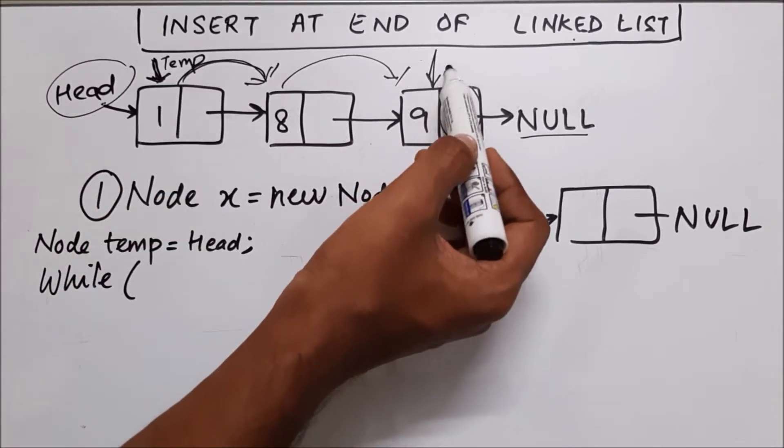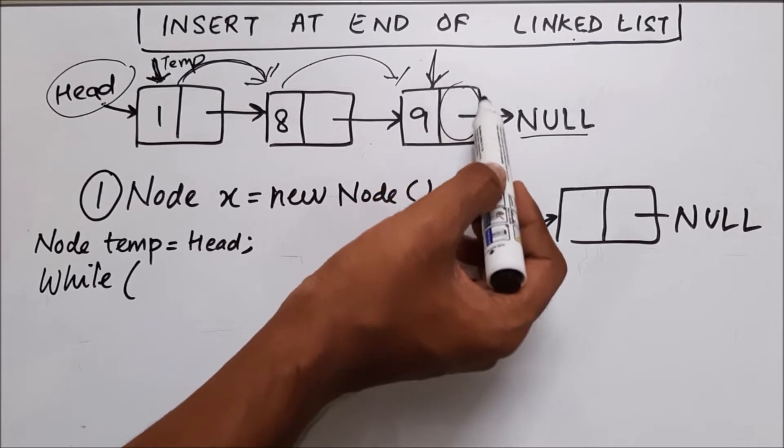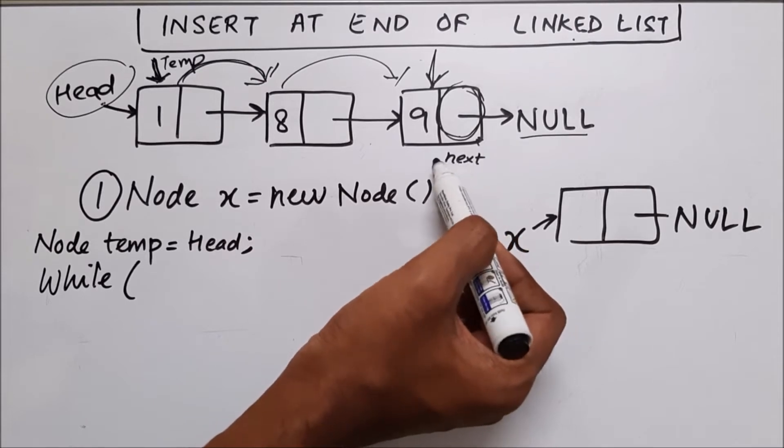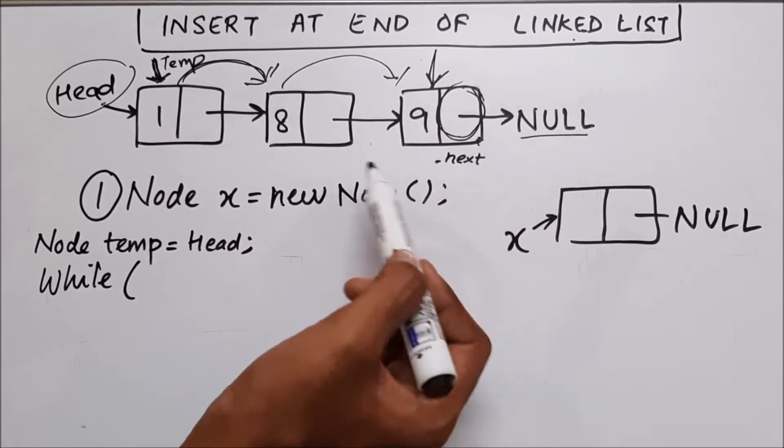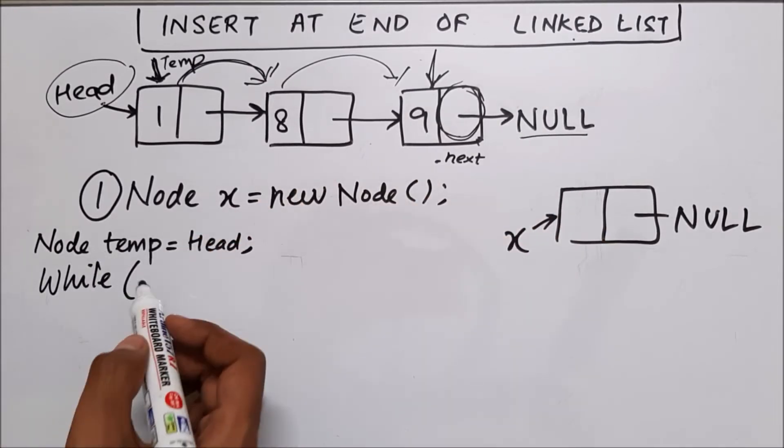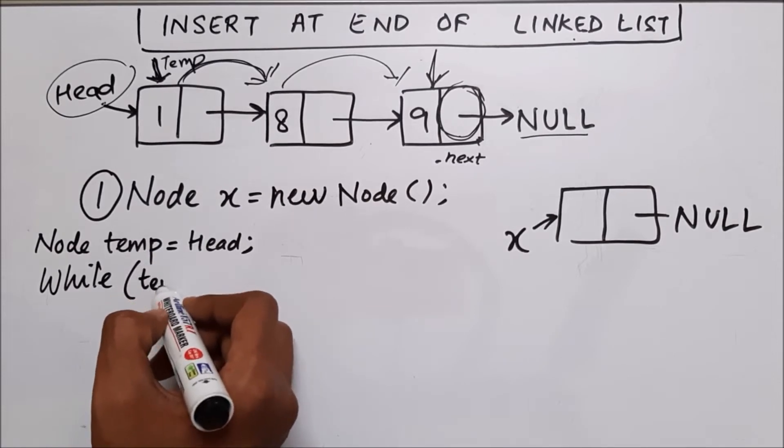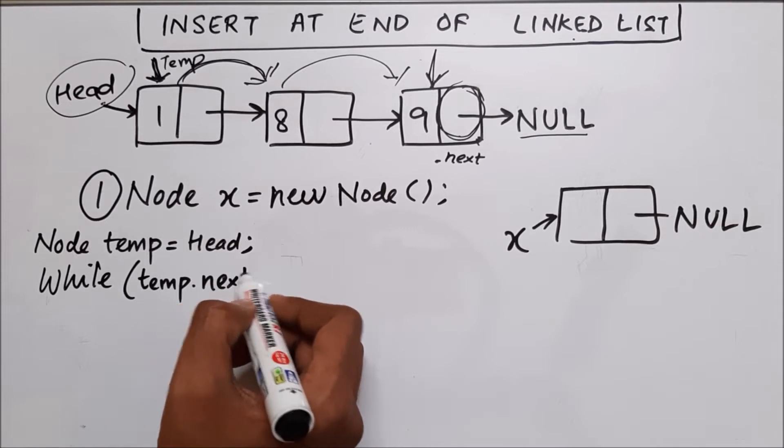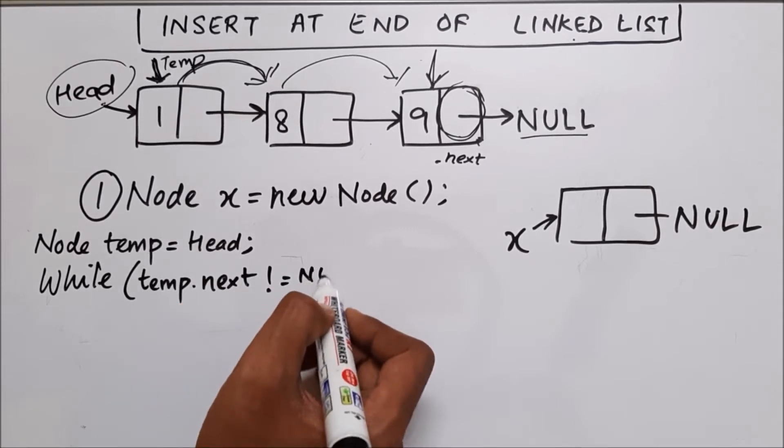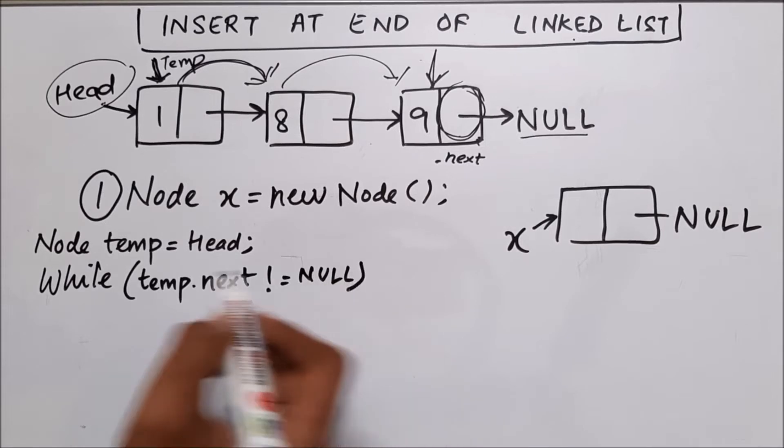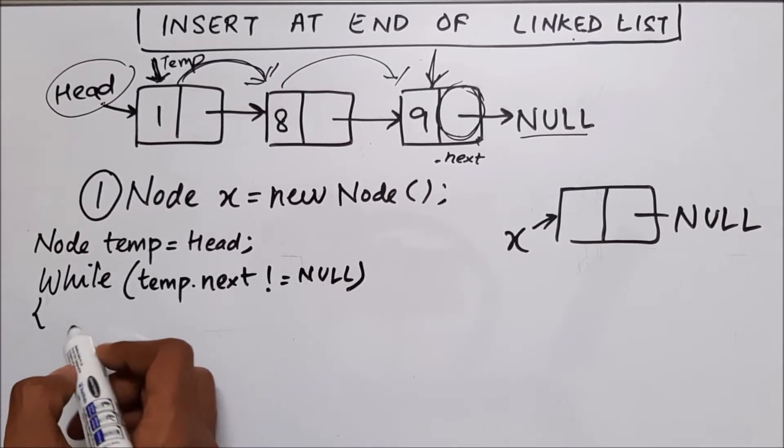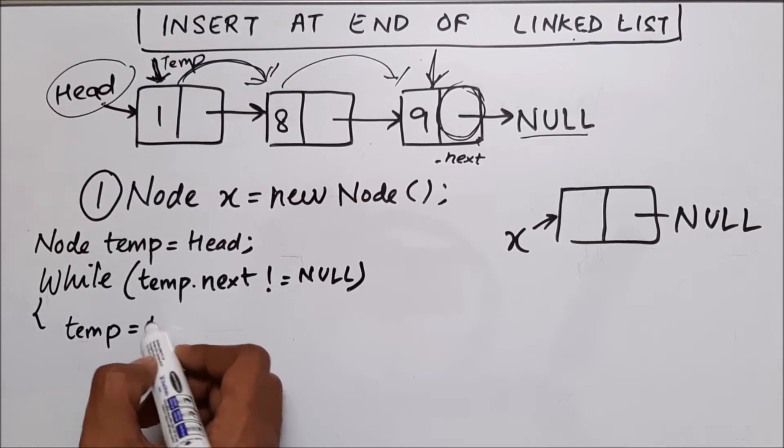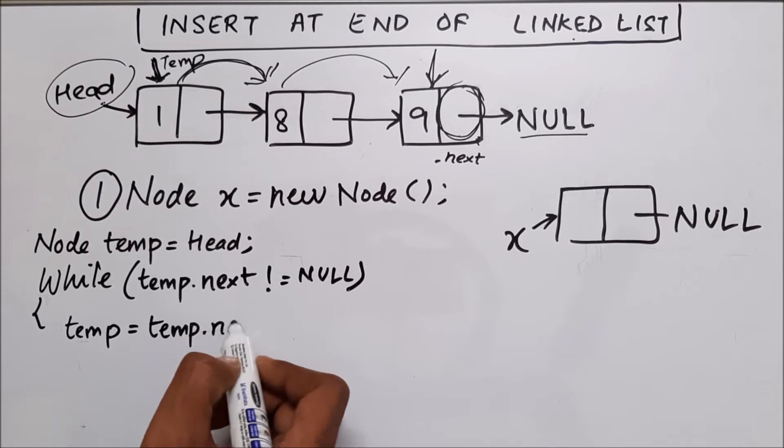When temp reaches this node, you can see that this node's next part, next dot next will have null. Then we have to break out of the while loop. So I'll give a condition that temp dot next is not equal to null. Then you have to move by one node. I'll say temp equal to temp dot next.